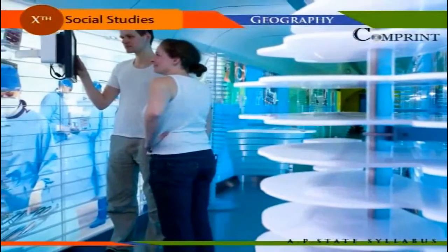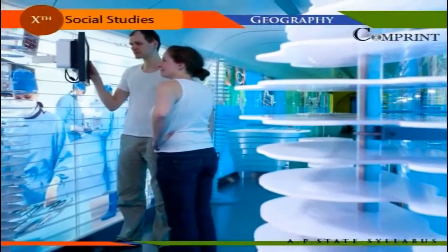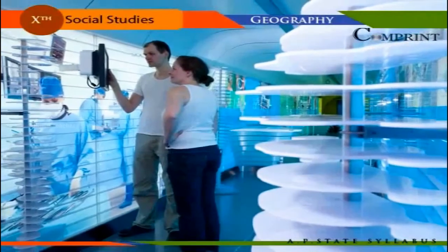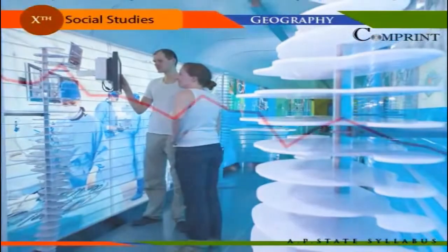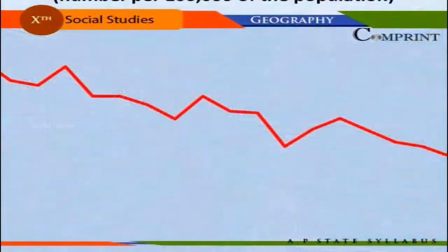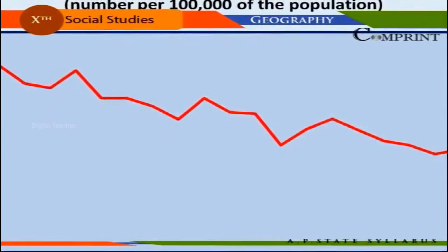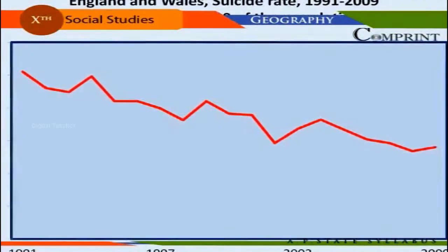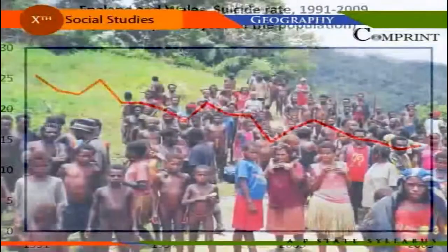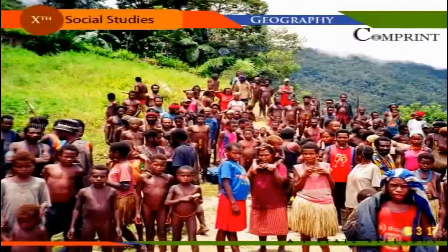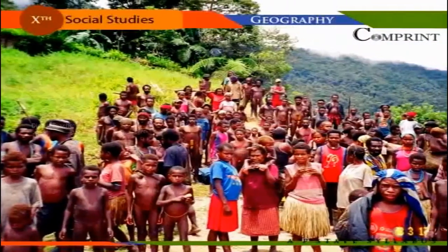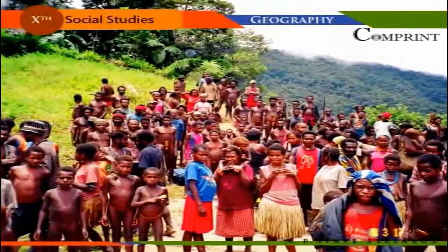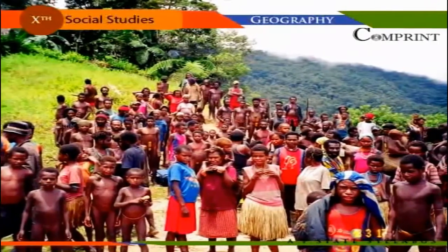Effective control of dreadful epidemic diseases through advancement of medical technology and widespread diffusion of healthcare delivery systems to all parts of the country has caused the death rate to fall very sharply. However, the high birth rate could not be controlled like the death rate, because of illiteracy and the religious and social attitudes of the people.